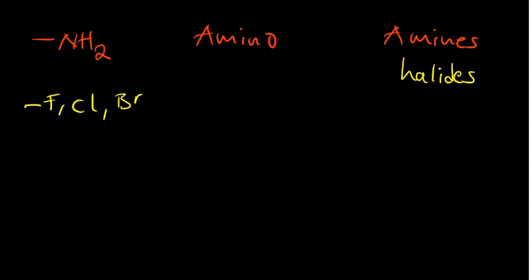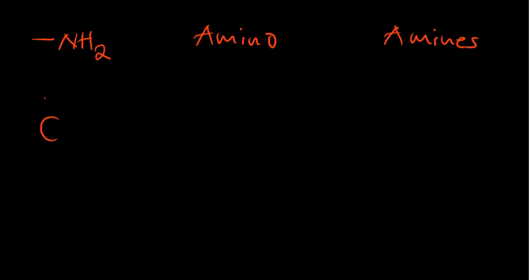There are groups we haven't discussed yet, like the amide. How is an amide different from an amino group? In an amide group, NH₂ may be present, but the key thing is there is a double bond to oxygen and a nitrogen.